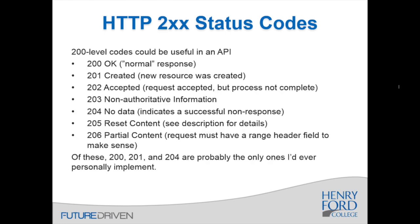As mentioned before, 200 is the most frequent response, indicating that everything was OK. The rest of the 200-level messages are different variations of an OK-type message. If running an API, 200 is the go-to. 201 is a good response when you've created a resource, and 204 is appropriate when no data is returned but the request otherwise worked fine.